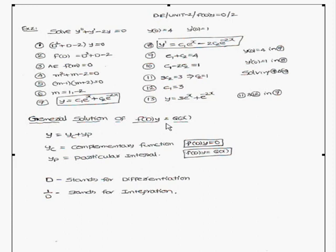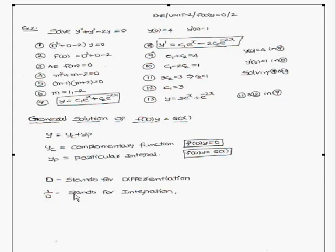The general solution of f(D)·y = q(x) is written as y = complementary function + particular integral, i.e., y = yc + yp. Also note the notation: D stands for differentiation, and 1/D stands for integration. Wherever you encounter D, it represents differentiation, and 1/D represents integration.